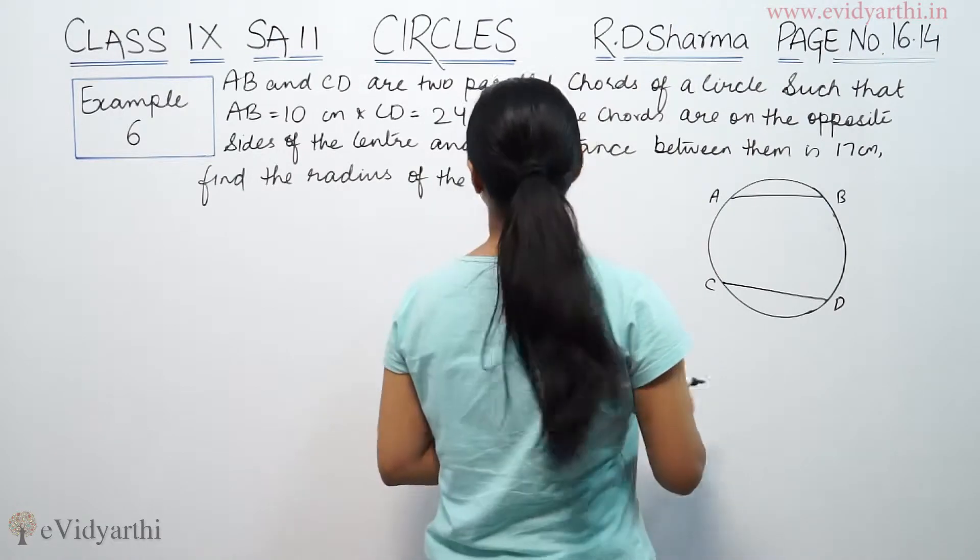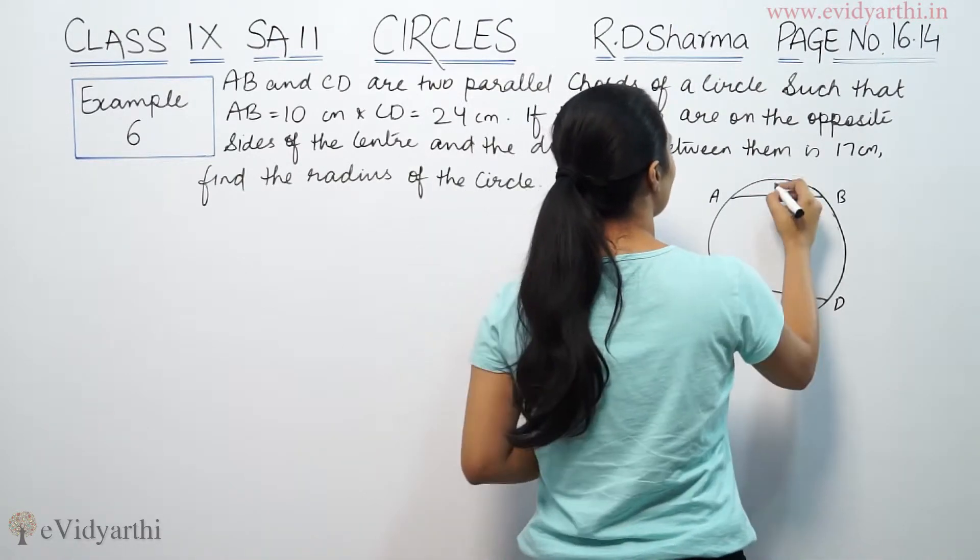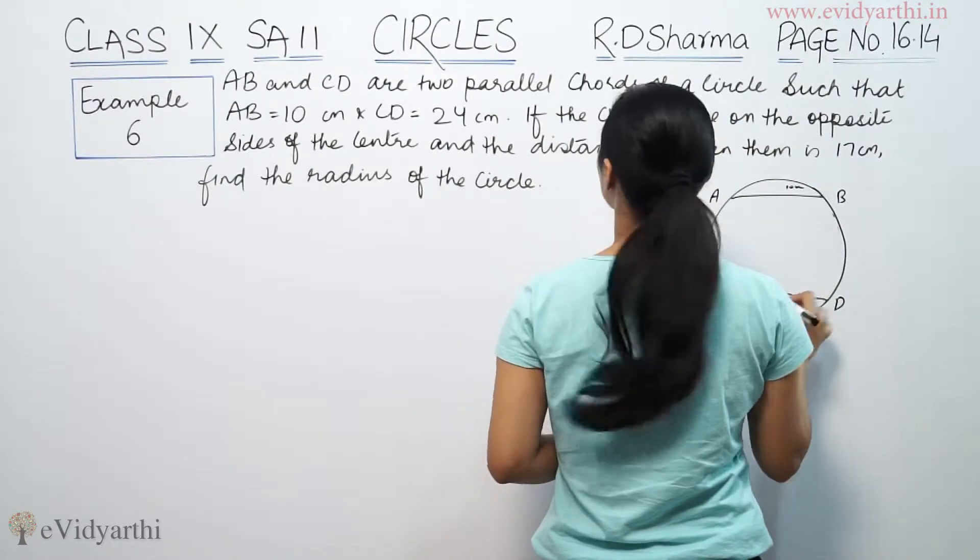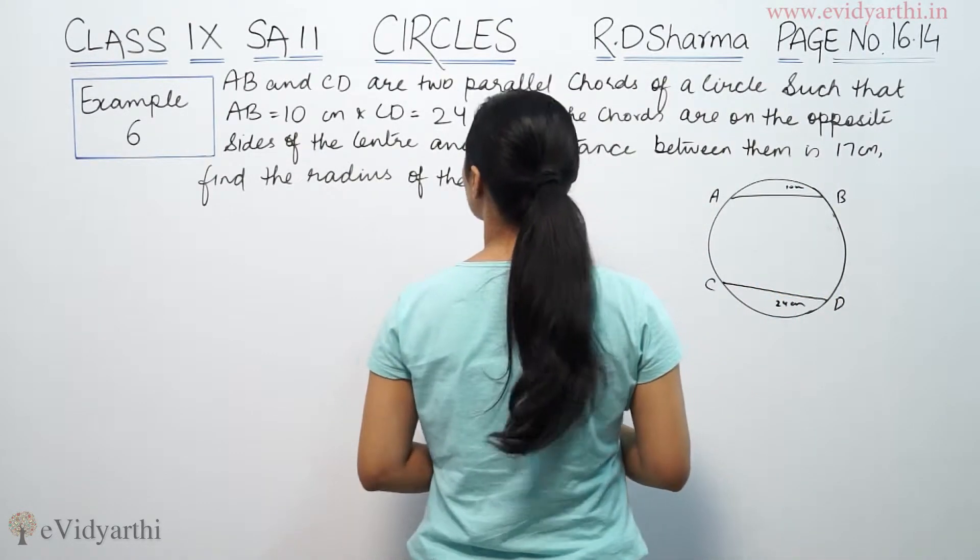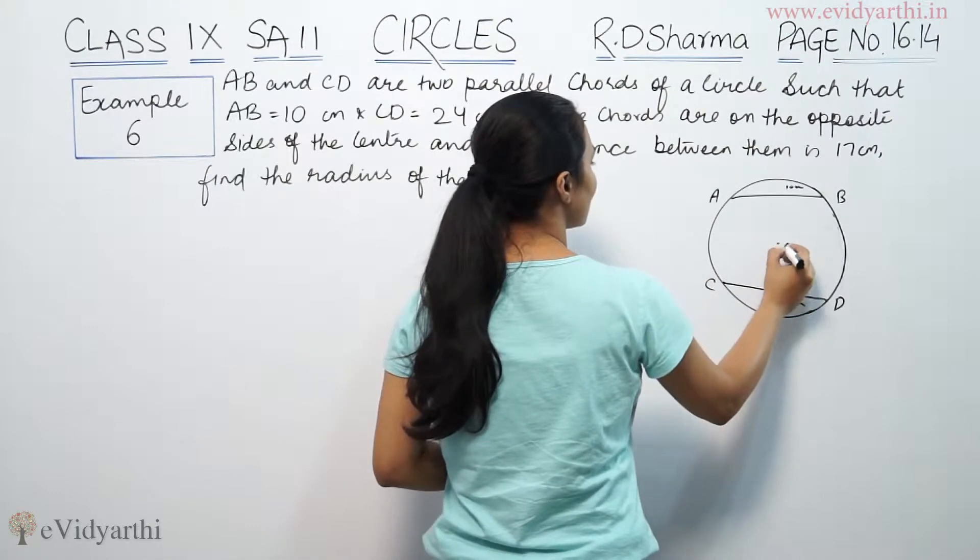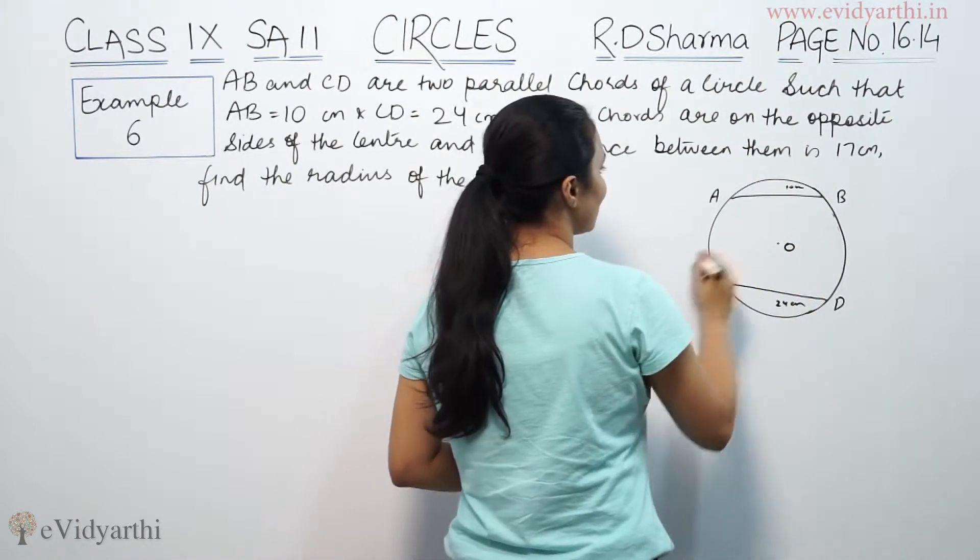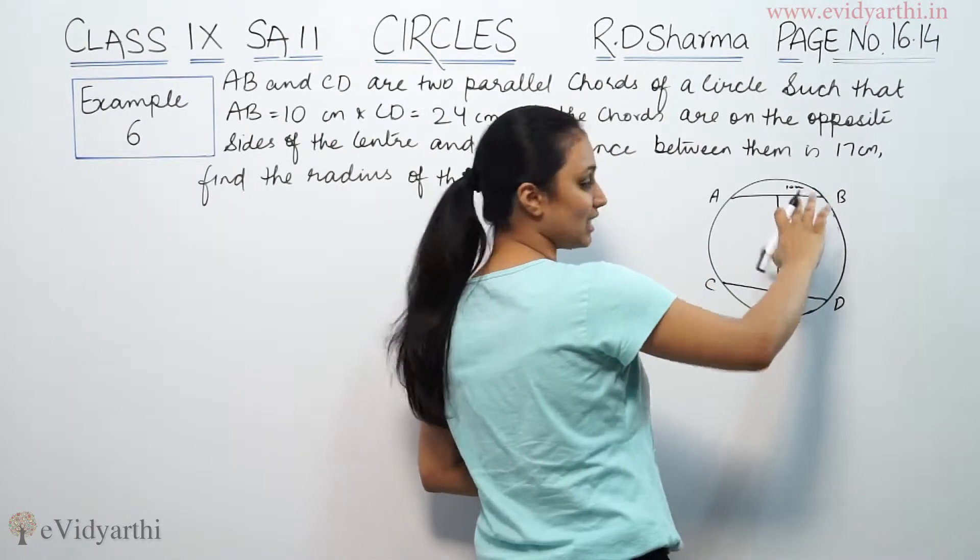Such that AB is 10 cm, the whole chord length is 10, and CD is 24 cm. If the chords are on the opposite sides of the center—suppose this is the center—and the distance between them is 17, the total distance is 17.